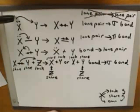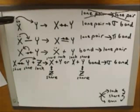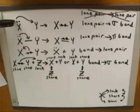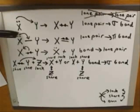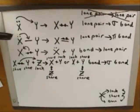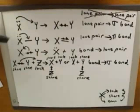How do we interpret the tail of this arrow? Well, this tells us that X is losing its lone pair — I think that's pretty clear. How do we interpret the tail of this arrow? Well, this also tells us that X is losing its lone pair. I think that's pretty clear.